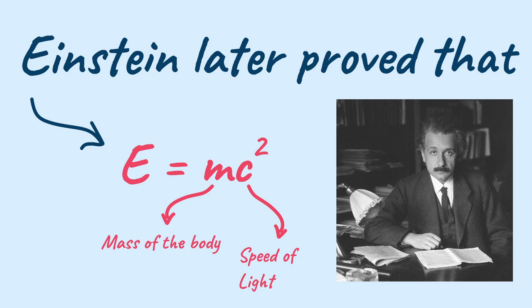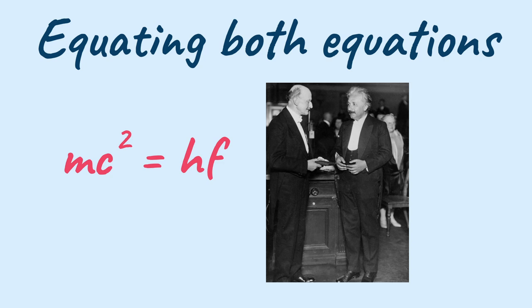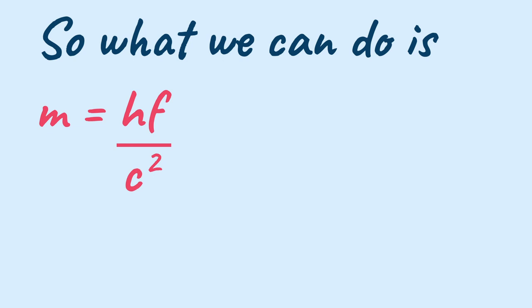But now let's take a look at the wider picture. Later Einstein proved that E equals MC square where M is the mass of the body and C is the speed of light. So now if we equate both of these equations as both of these are equations for the energy, we get MC square equals HF.